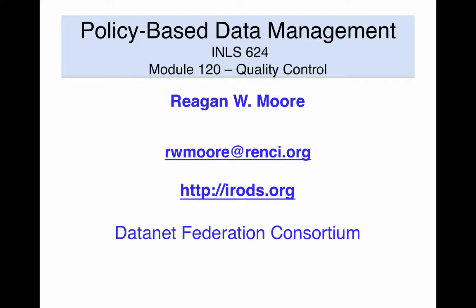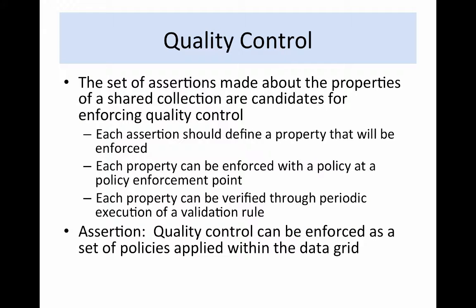Quality control is equivalent to verification of the assertions that are made about the data grid and data collection properties. The set of assertions made about the properties of a shared collection are candidates for enforcing quality control. Each assertion should define a property that will be enforced.